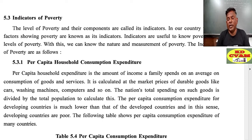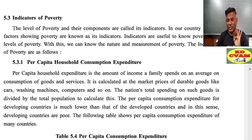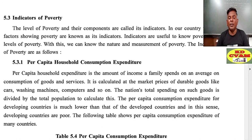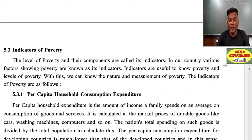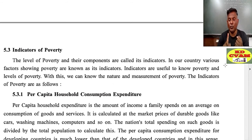The level of poverty and their components are called its indicators. In our country, the various factors showing poverty are known as its indicators. Indicators are useful to know the poverty levels. With this we can know the nature and measurement of poverty. The indicators of poverty are as follows. Number one: per capita household consumption expenditure.